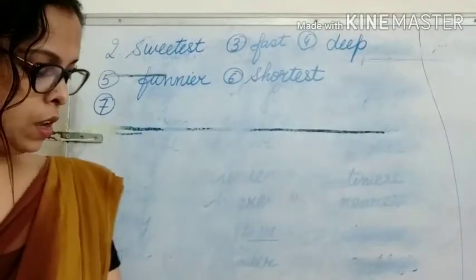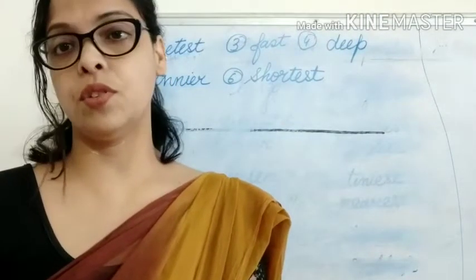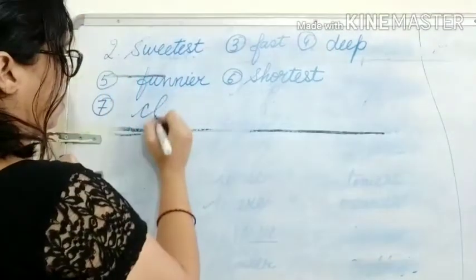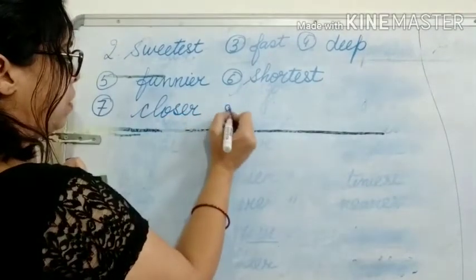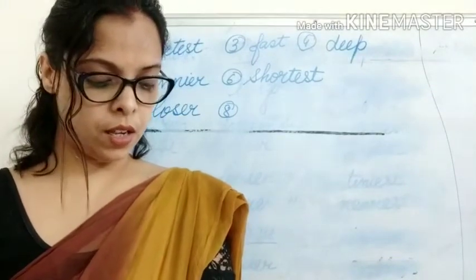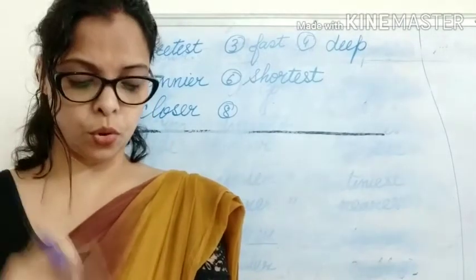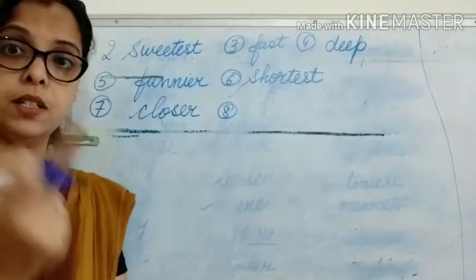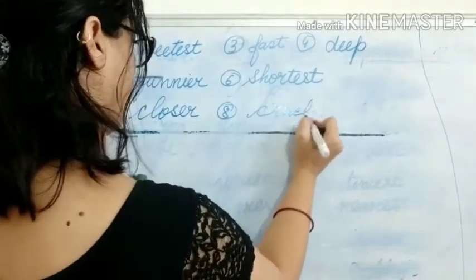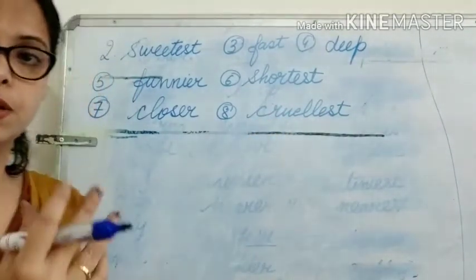Seventh: 'Raman's house is ___ to the school than mine.' 'Than' is there, so we use the comparative form: 'closer.' Eighth: 'One of the ___ conquerors was Genghis Khan.' The article 'the' is there, so 'cruel' becomes superlative — and the L is doubled: 'cruellest': C-R-U-E-L-L-E-S-T.